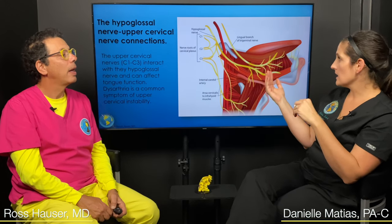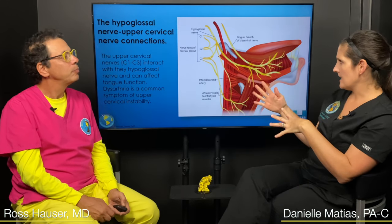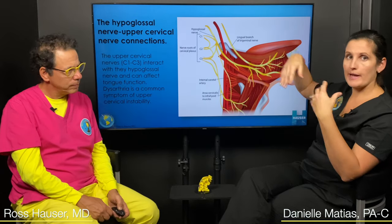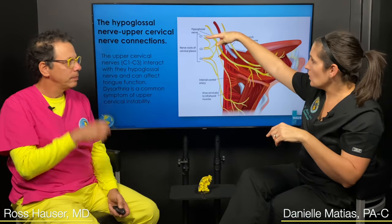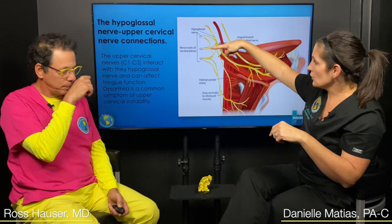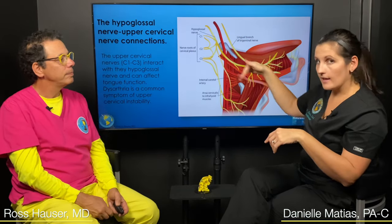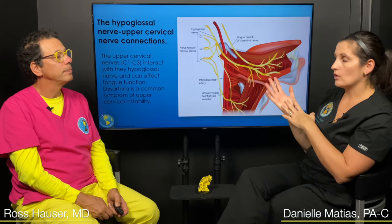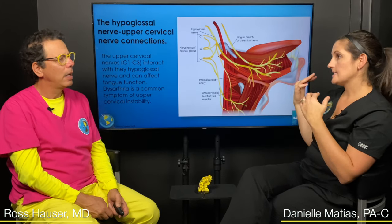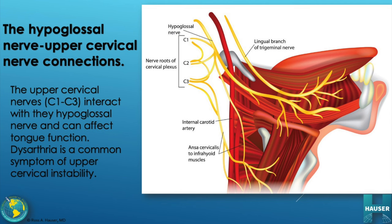Especially related to the mouth, the upper cervical spine — vertebrae C1 and C2 — these nerves are actually connected to the hypoglossal nerve that goes to the tongue. So it's not unfathomable that if somebody had a neck instability at C1, C2 — maybe those tissues were strained during a procedure or bad posture — it could actually affect the nerve input to the tongue and the mouth.